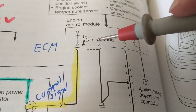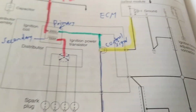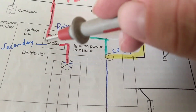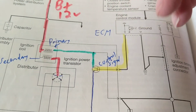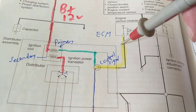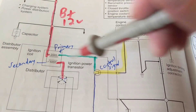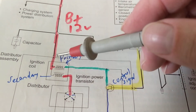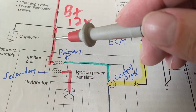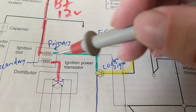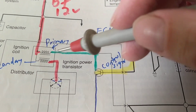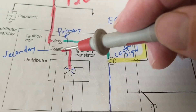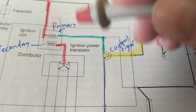The computer's two jobs: get an input, give an output. Now, over here at the ignition coil — let's say I have no spark. Where would I go? To the primary to see if there's a spark? If you said yes, that's incorrect. Would you go here? If you said the secondary output, you're correct.